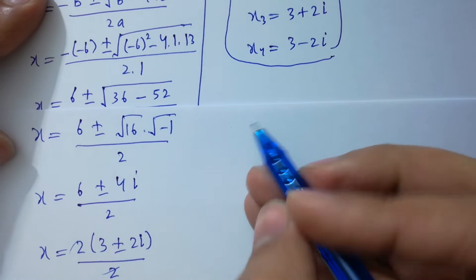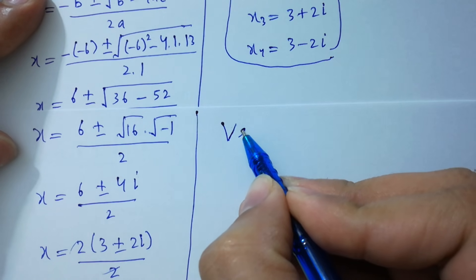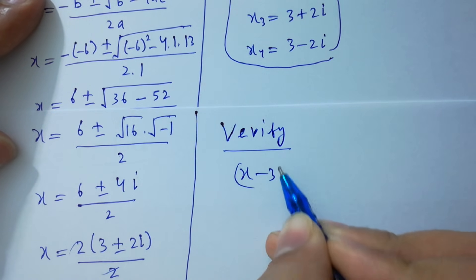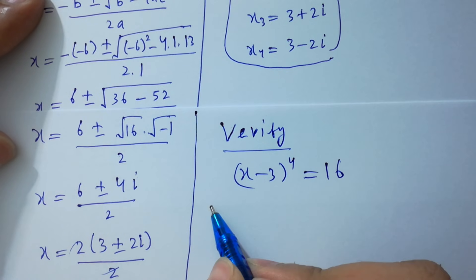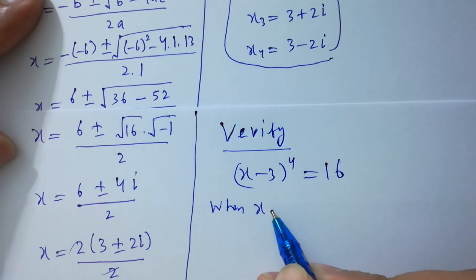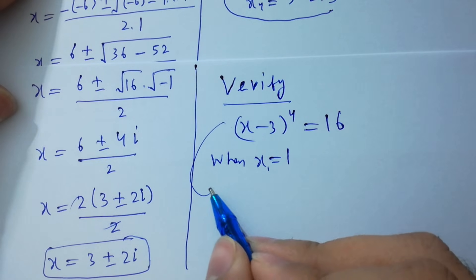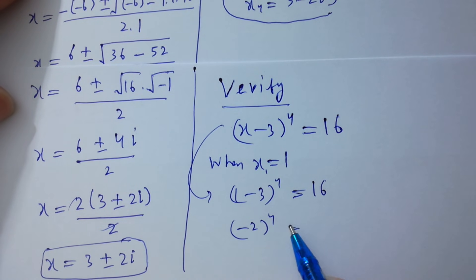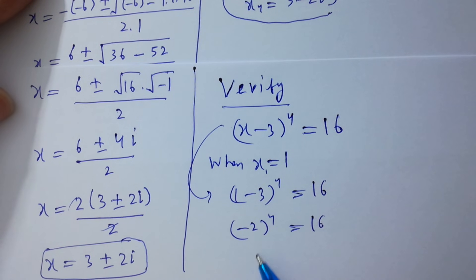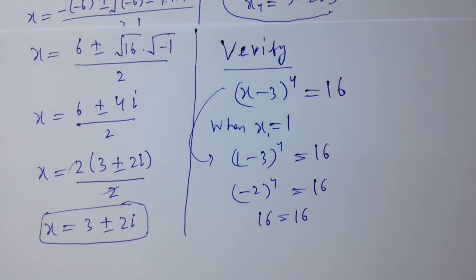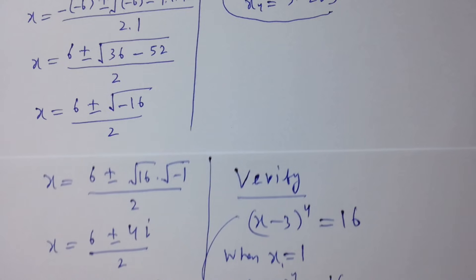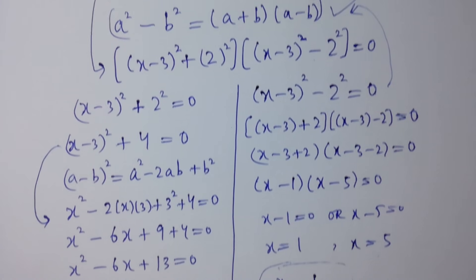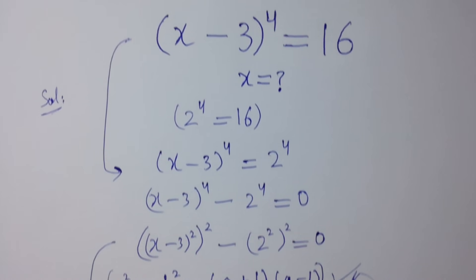Now let's verify. For the equation (x minus 3)⁴ equals 16, when x equals 1: (1 minus 3)⁴ equals (minus 2)⁴ equals 2⁴ equals 16, which satisfies the equation. Thanks for watching this video. Please subscribe to this channel to get notifications of my new videos, and don't forget to share these videos with your classmates and friends so they also benefit. Okay, bye.